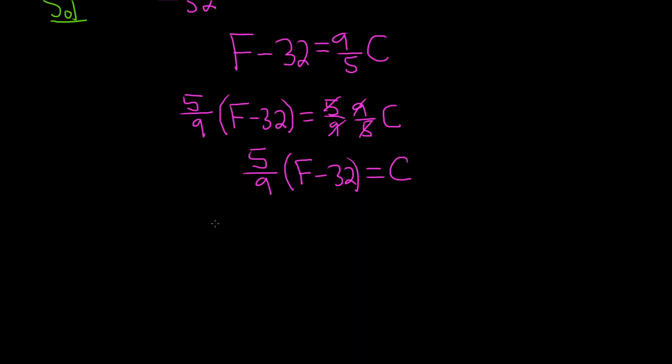I'm going to write the c on the left-hand side. So c is equal to 5 ninths, parentheses, f minus 32. And that would be the very final answer.